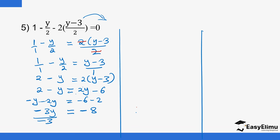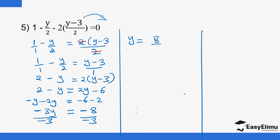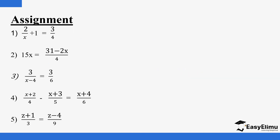Dividing both sides by negative 3: negative 3 cancels negative 3, leaving Y on one side. On the other side, 8 over 3: 3 goes into 8 twice with remainder 2, giving Y equals 2 and 2 over 3. That's all for now — there are a few questions for you to practice what you've been learning. When done, you can always post your feedback. Until next time, goodbye.